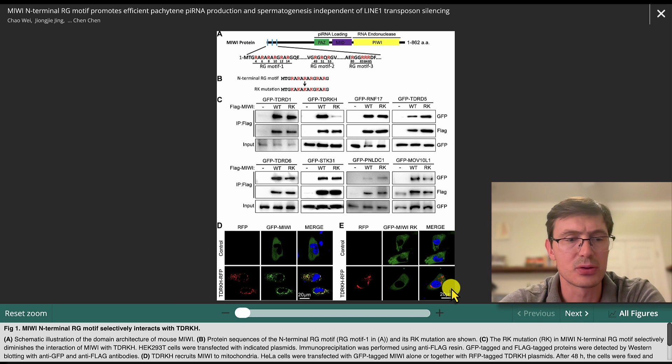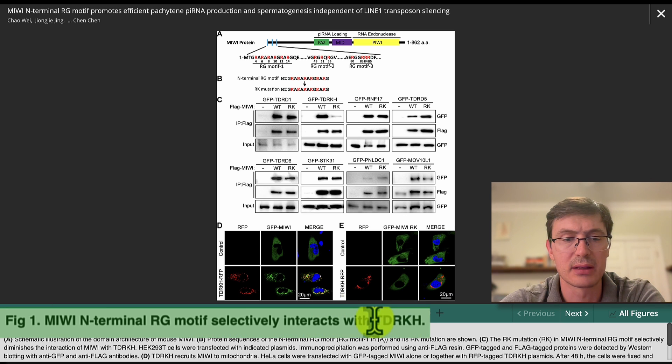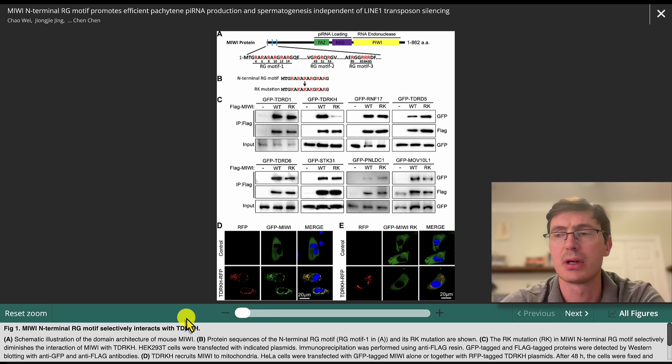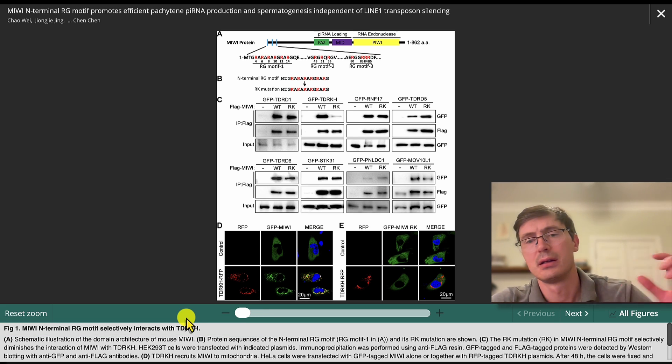But beyond that, what the data supports is that this MIUI-TDRK selectively interacts with TDRK. That's basically this panel C, and it's supported for TDRK interaction also with this other technique. So that's a pretty solid title. It's good to have an active verb linking two things. It's like this does so-and-so, and that's exactly what we have.